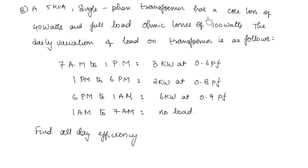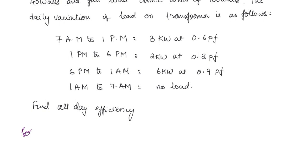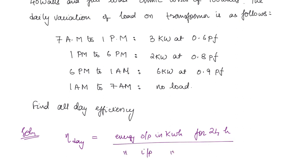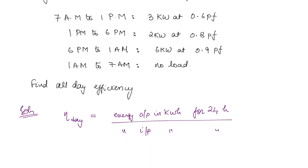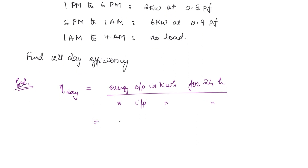A 5 kVA single phase transformer has a core loss of 40 watts and full load ohmic losses of 100 watts, with a given daily variation of load. Find the all-day efficiency. The all-day efficiency η_day = energy output (kWh) over a 24-hour period divided by energy input, expressed as output divided by output plus losses.